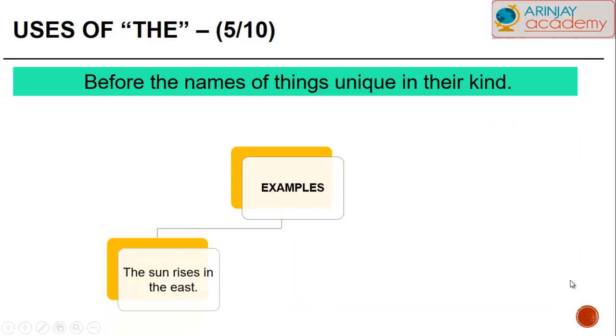THE is also used before the names of things unique in their kind. For example, the sun rises in the east. The moon shines at night. The sun, the moon are one of their kinds. Therefore, we use the article THE.